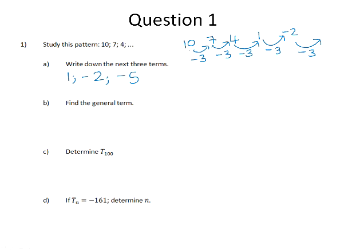Number b, find the general term. The moment a pattern has a constant first difference, we know that that pattern is a linear pattern. And the general term for a linear pattern will take the form of a n plus b, and we know that the a value will be the same as the difference between the terms. So, we already know that this pattern will be negative 3n.